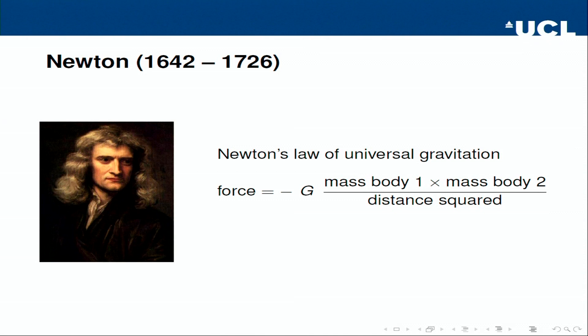Most amazingly, Newton realized that the mathematics he needed to describe the physics of planetary motion did not exist. So he sat down and invented it. Calculus was essentially a necessary byproduct of developing his gravitational theory. From today's point of view, this is impossible to replicate — any modern scientist with a physics problem can find a mathematician who already knows the relevant mathematics.